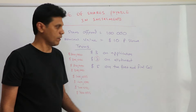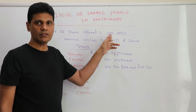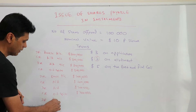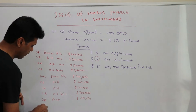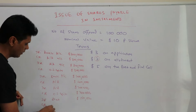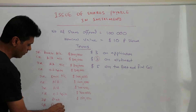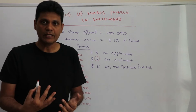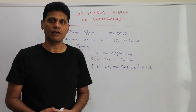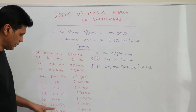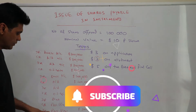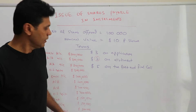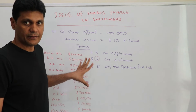Finally, the company receives $5 on the first and final call: $5 per share times 100,000 shares equals $500,000. Debit bank account $500,000 and credit first and final call account $500,000. Then the first and final call account is transferred to ordinary share capital: debit first and final call account $500,000 and credit ordinary share capital account $500,000.